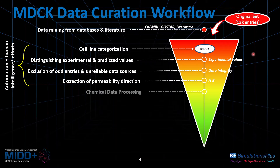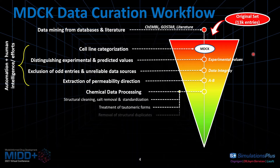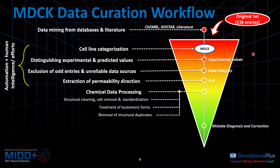The next step is chemical data processing, which is a standard procedure in any cheminformatics project. We do structural cleaning, removing salts, standardization of functional groups. We also treat different tautomeric forms and ensure that there are no structural duplicates in the dataset. The next part I want to focus on is mistake diagnosis and correction.